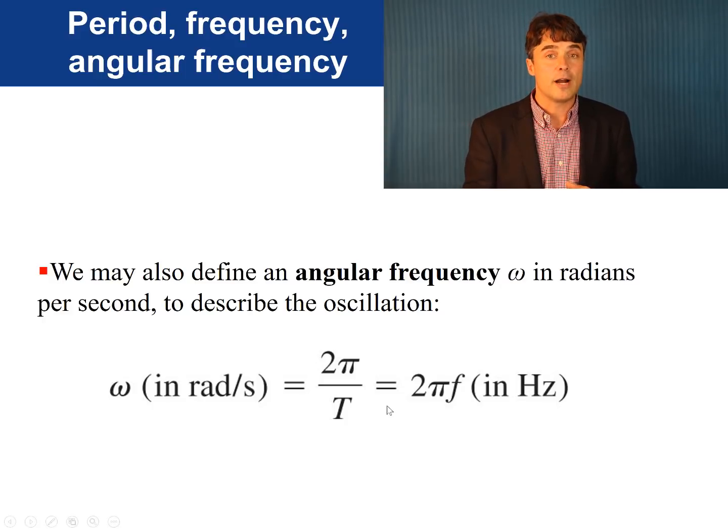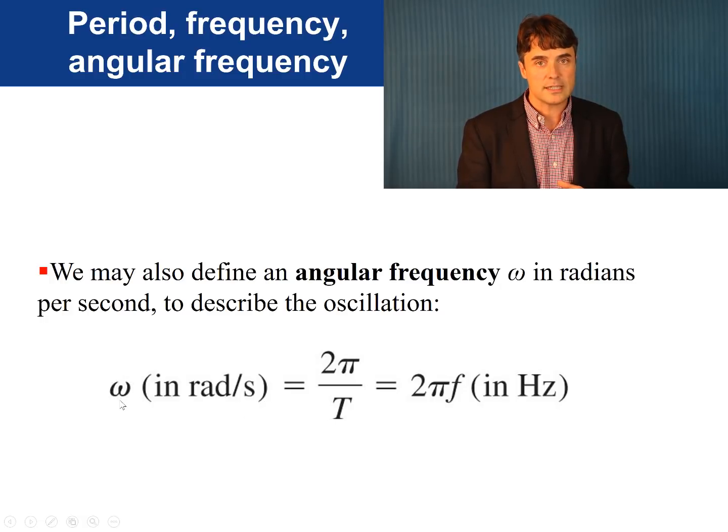The symbol for angular frequency is the lowercase Greek letter omega, which looks like a curly W. In terms of the period, it is omega equals 2 pi over T.